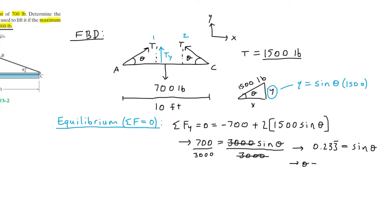Solving for theta, we can take the inverse sine. So this ends up as theta equals sine inverse of 0.233, which is equal to 13.49 degrees.